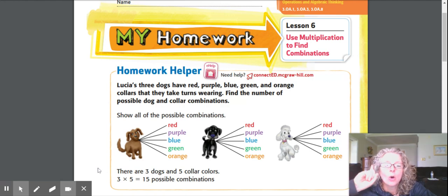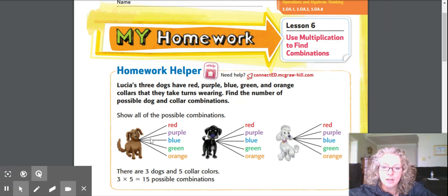Now we need to take care of dog two. Look how pretty they made that dog. I would just draw a circle and put the number two in it, and then I would do those same colors. And then over here, pretty dog, I would just make a circle and put a number three in it. Once I've done that, I'll come up with all the dogs and the color combinations.